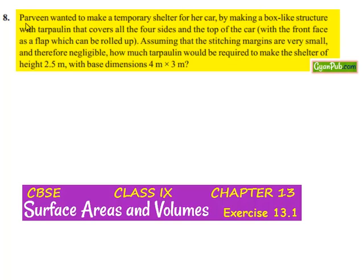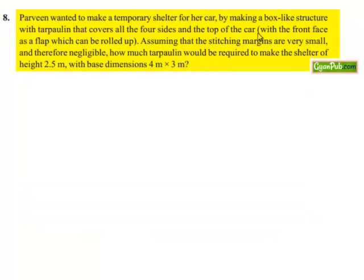Moving on to the 8th question: Parveen wanted to make a temporary shelter for her car by making a box-like structure with tarpaulin that covers all four sides and the top of the car, with the front face as a flap which can be rolled up.